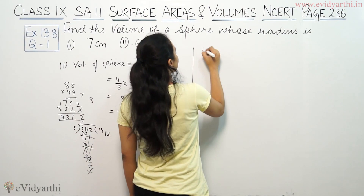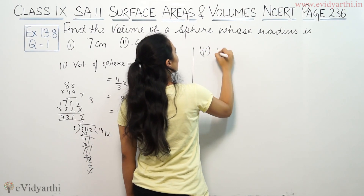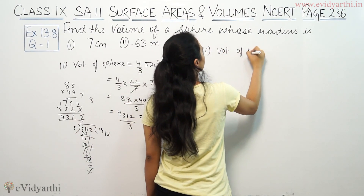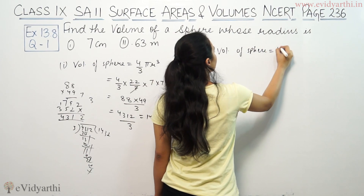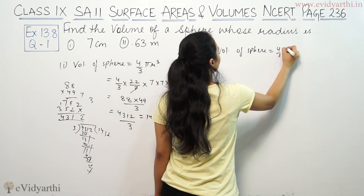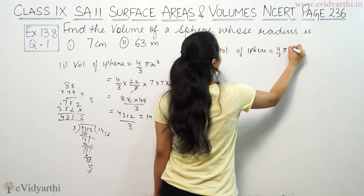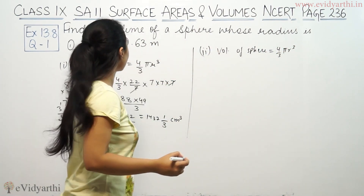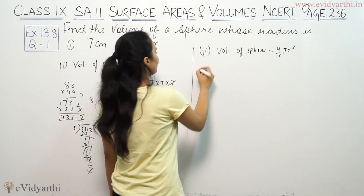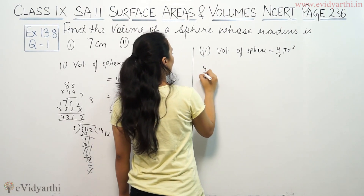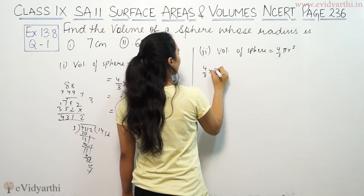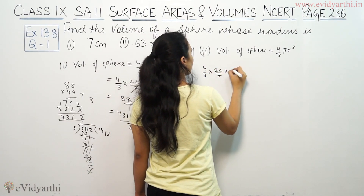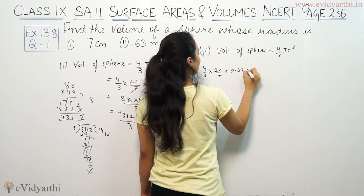For part 2, volume of sphere equals 4 by 3 pi r cubed, where radius is 0.63 meters. So we have 4 by 3 into 22 by 7 into 0.63 cubed.